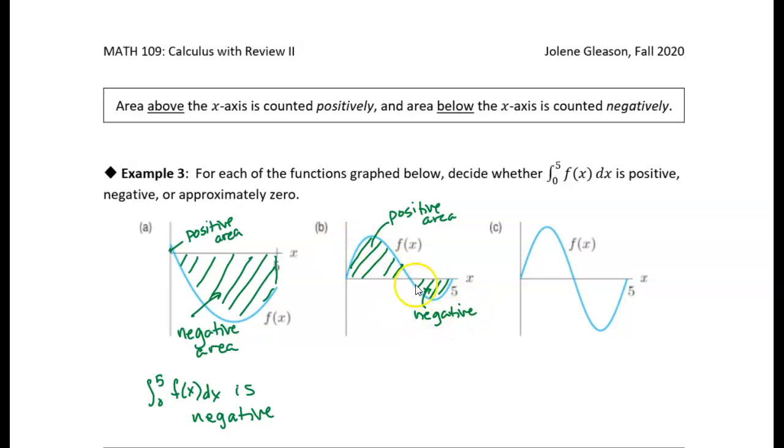Okay, so if you add those two, you've got more positive area than negative area. So this integral from zero to five of f(x) dx is positive. Just because we've got more positive area than negative area, we add them together, it's going to be positive overall.